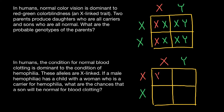One child would get a defective X chromosome from the mother's side and a defective X chromosome from the father's side. Another child would get a normal X chromosome from the mother's side and a defective X chromosome from the father's side. A third child would get a defective X chromosome from the mother's side and a normal Y chromosome from the father's side. The fourth child gets a normal X chromosome from the mother's side and a normal Y chromosome from the father's side.